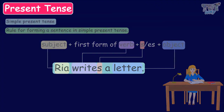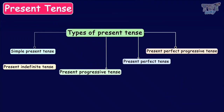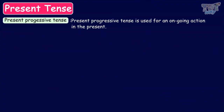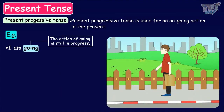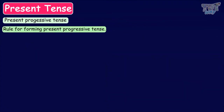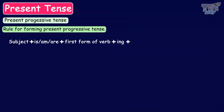Now let's revise present progressive tense or continuous tense. The present progressive tense is used for an ongoing action in the present. For example, 'I am going' — the action of going is still in progress. The rule for forming a present progressive tense is: subject plus is, am, or are, plus the first form of the verb with ing, and then the object.